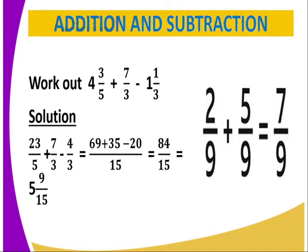Plus 7 over 3 minus 4, that is also the 1 and a third. You also convert it into an improper fraction. However, you are going to get 3 times 1, which is 3 plus 1, which is 4 over 3. You are going now to get the LCM of all the denominators, that is 5, 3, and 3. And in our case, the LCM is 15.